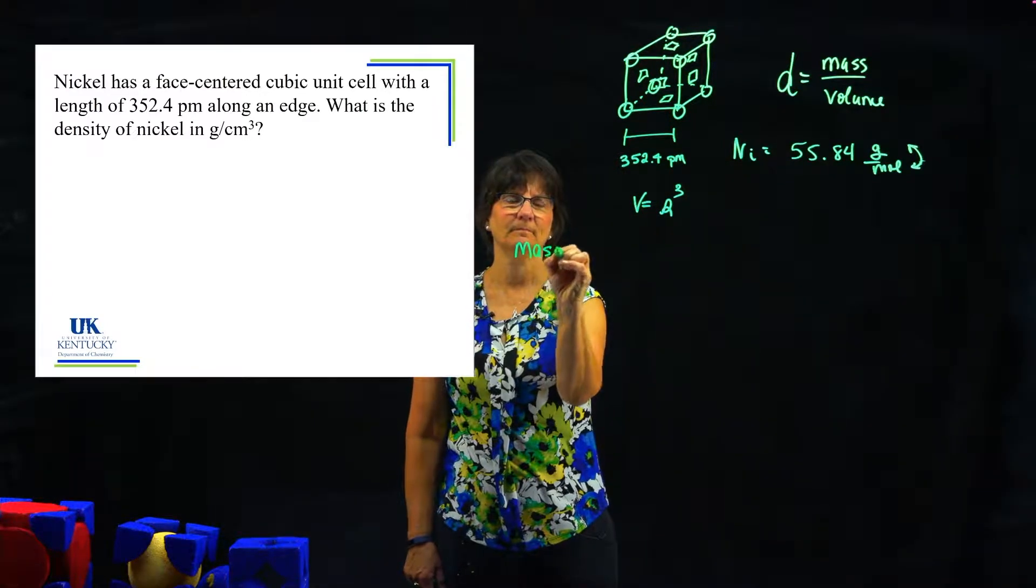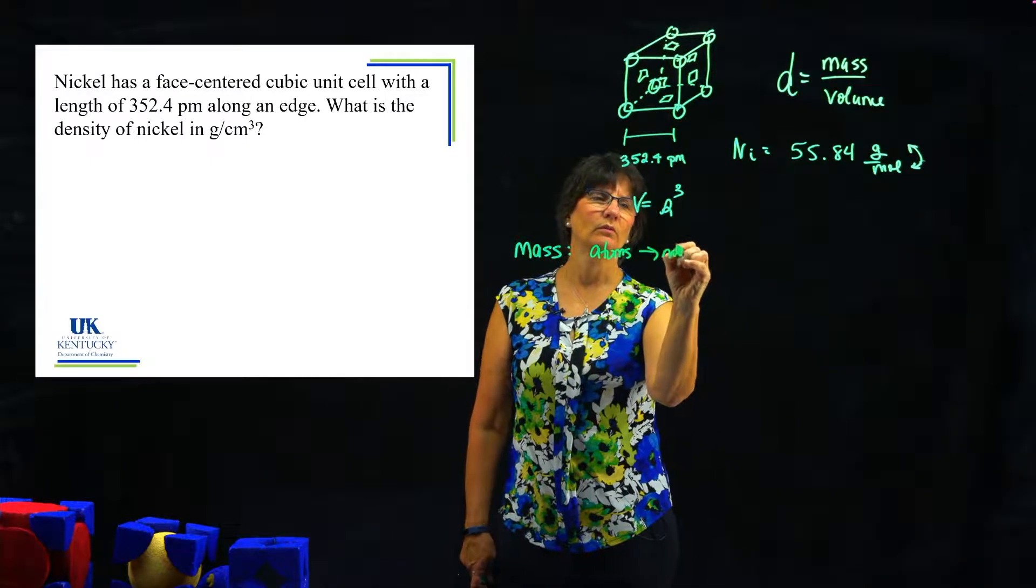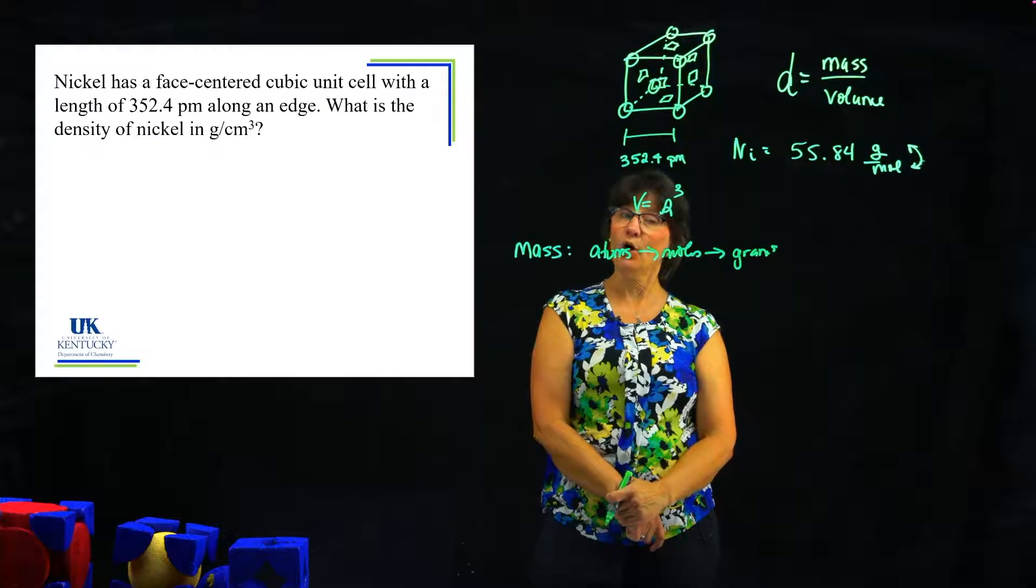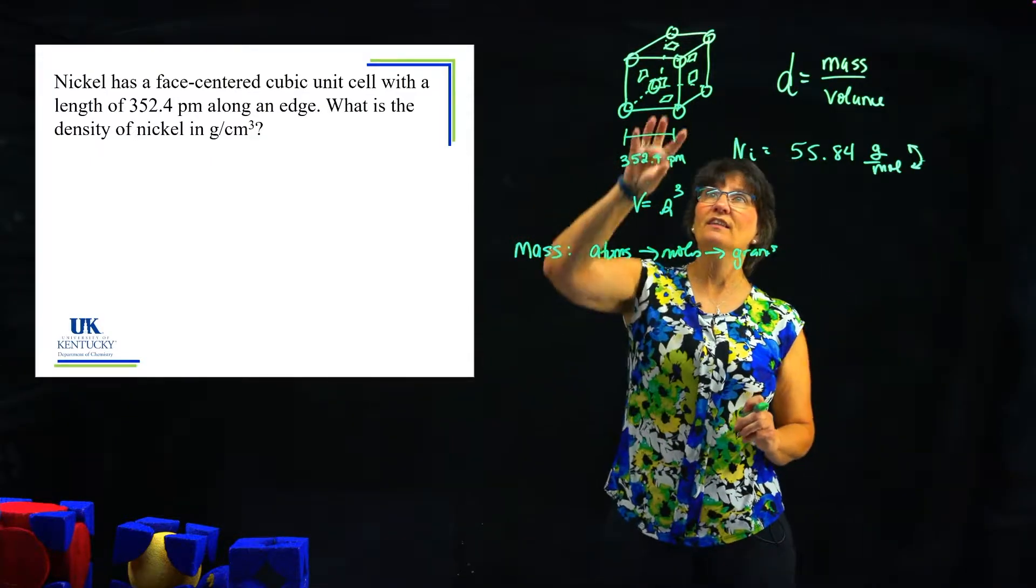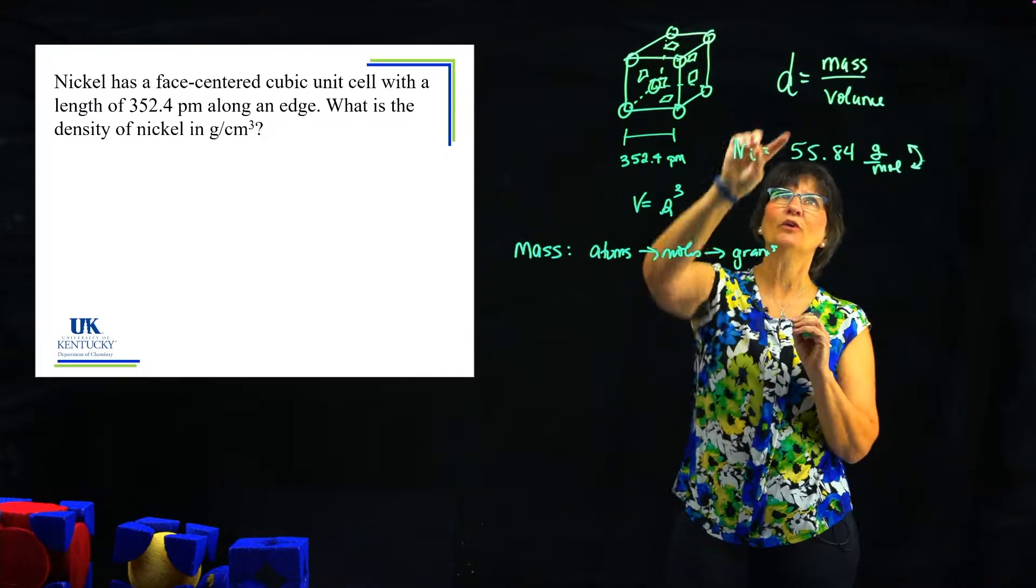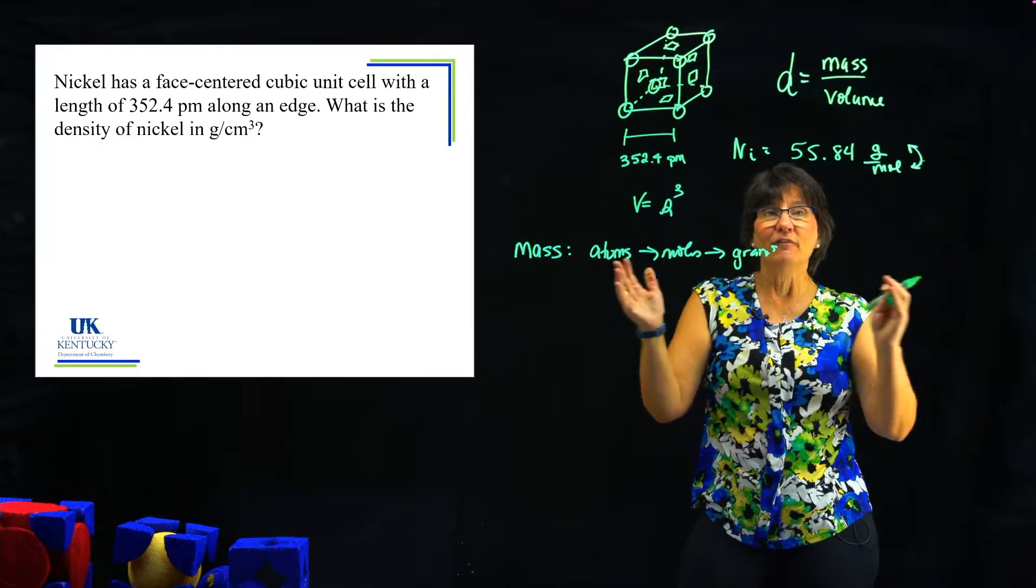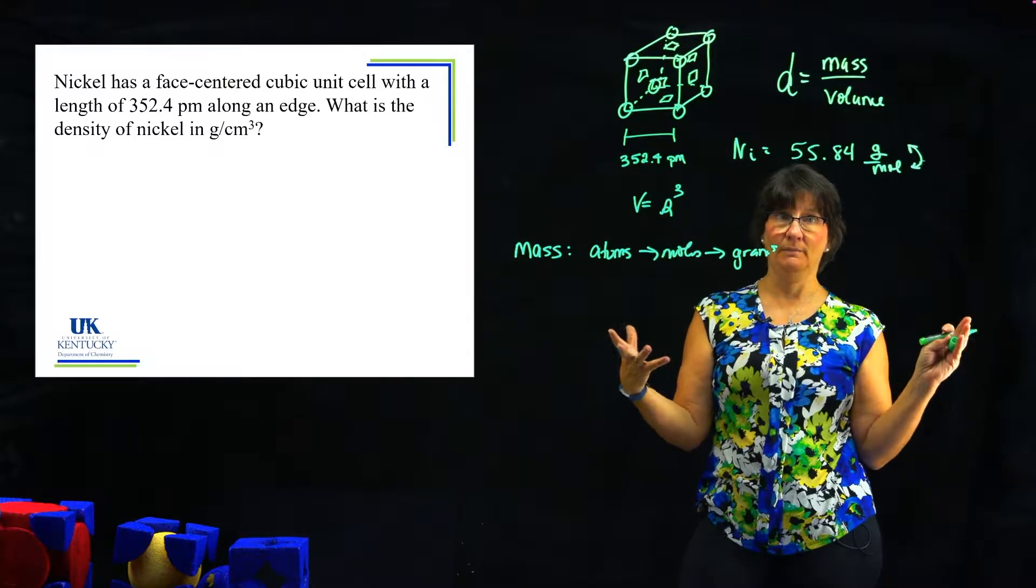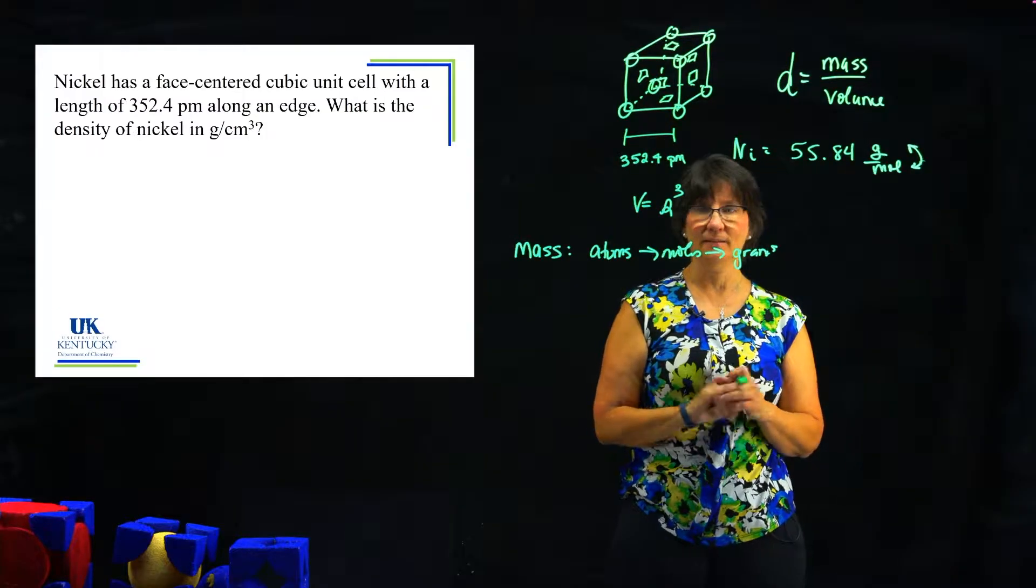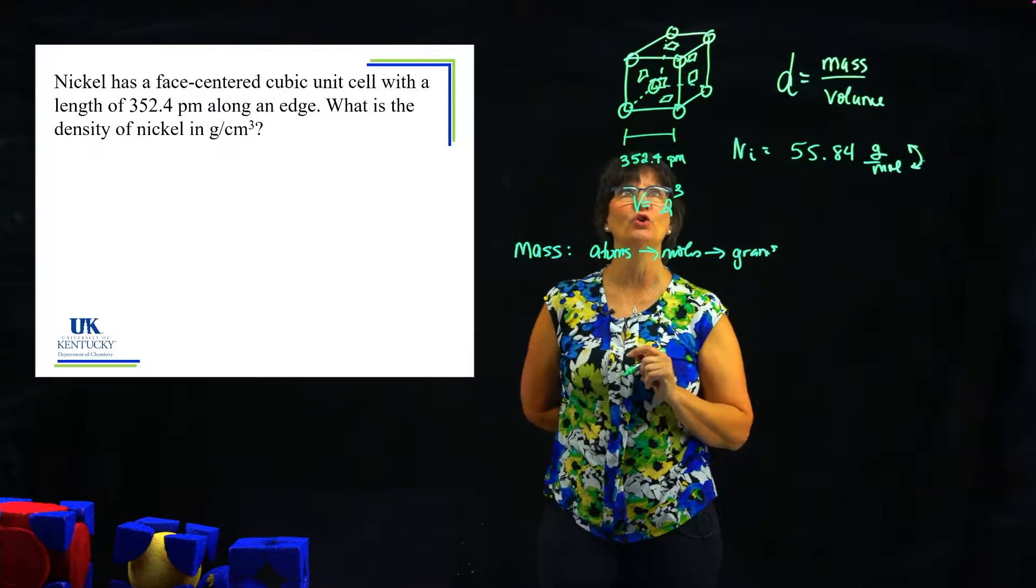If I knew moles, I could get grams. If I knew grams, I could get moles. So I've got the pieces that I need. Let's just go out and solve each of these pieces. Let's start with the mass. I'm going to go from atoms to moles to grams of this tiny little unit cell. Because this is what I know about density. If the density is what we call an intensive property, does not depend upon the amount. So if we knew the mass to volume ratio of this tiny little unit cell, it would have to be the same density of the whole thing.